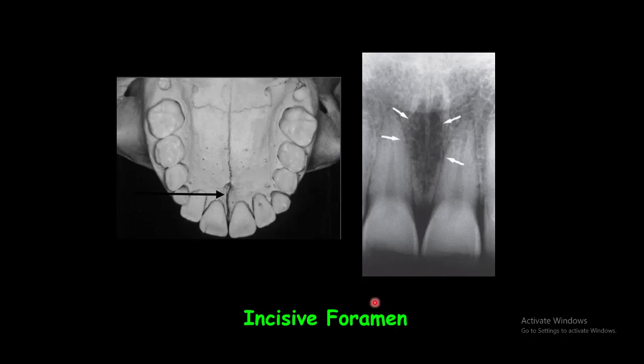In intraoral radiographs, the incisive foramen is usually projected between the roots in the region of the middle and upper third of the central incisors, and it appears as an ovoid radiolucency.